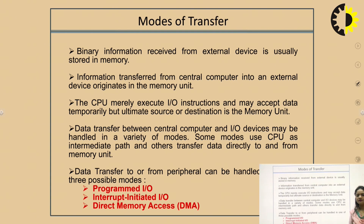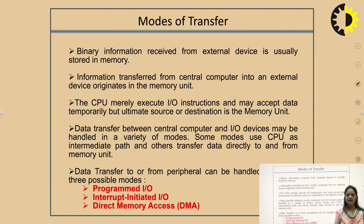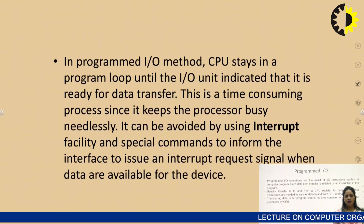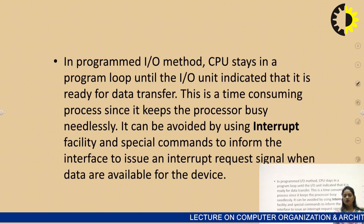Next are the modes of transferring data in a computer system. Since input-output devices and the CPU operate at different speeds — the CPU being much faster — there are three modes of transmission between them: programmed input-output, interrupt-initiated input-output, and DMA — direct memory access.